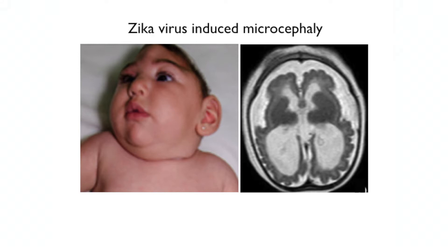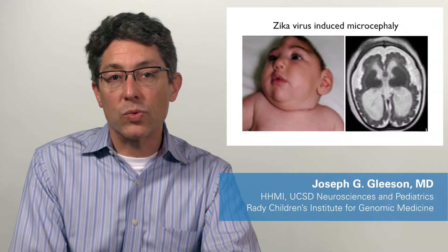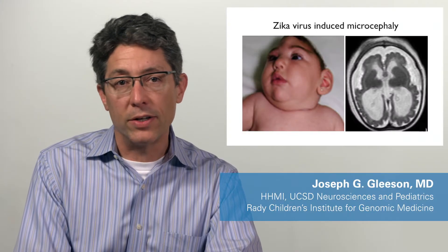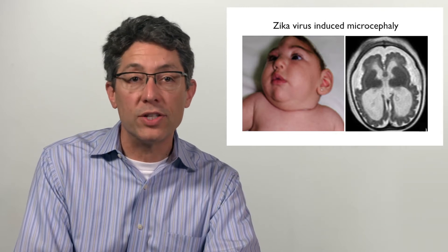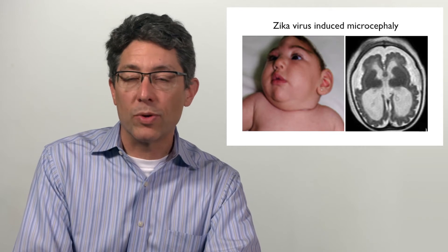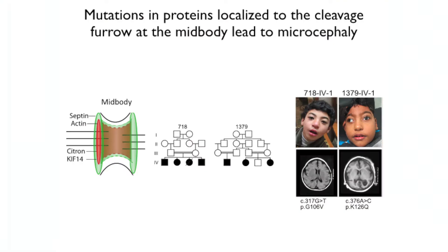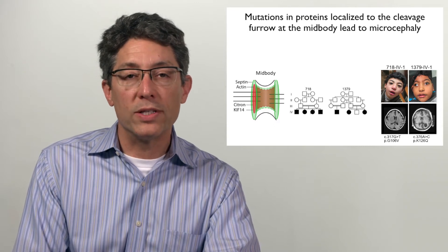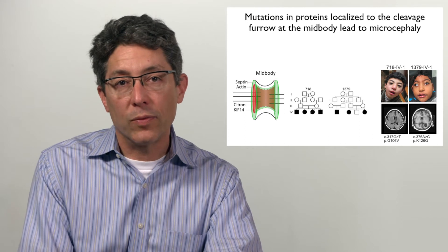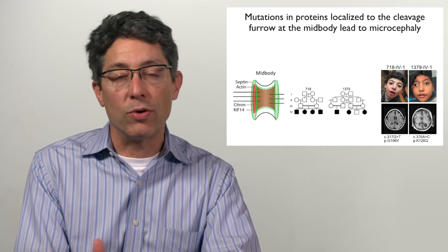There's little doubt now that Zika infection during pregnancy can lead to microcephaly, but the question is how? Previous work found that Zika infection in neuroprogenitors led to cell death accompanied by failed cytokinesis or cell division, evidenced by cells with multiple centrosomes. We previously found several genetic forms of microcephaly characterized by multiple centrosomes, such as mutations in CIT and KIV-14. These proteins are localized to the cleavage furrow during telophase when cells are dividing, and we wondered whether there was any connection between the genetic and the viral forms of microcephaly.